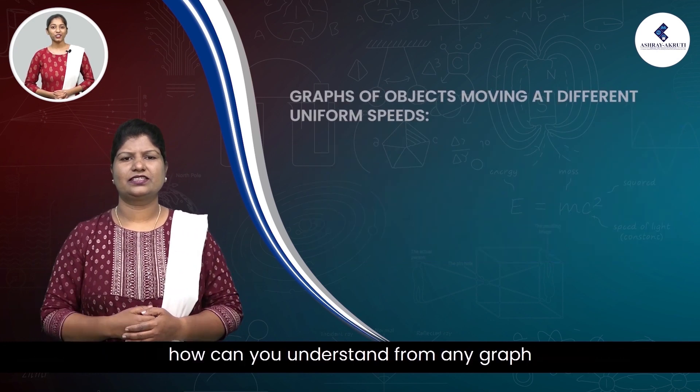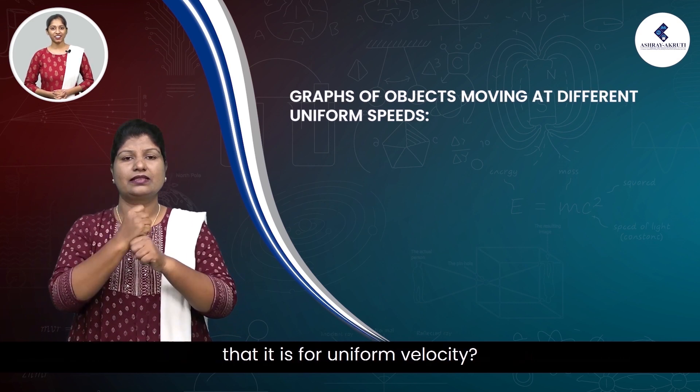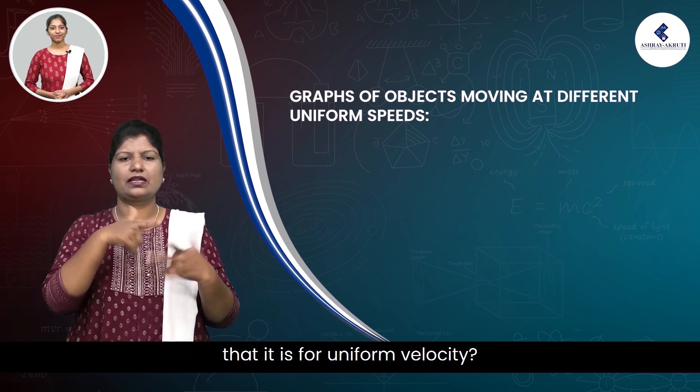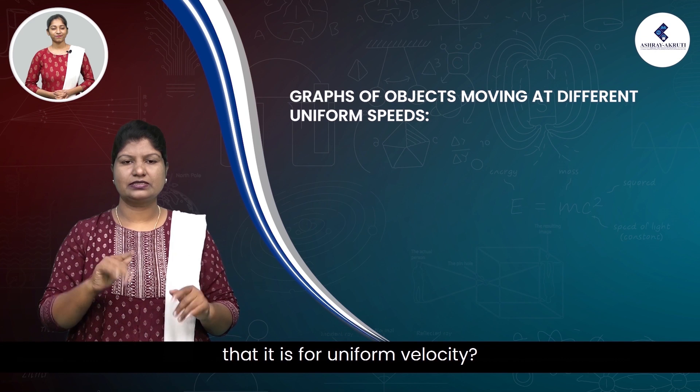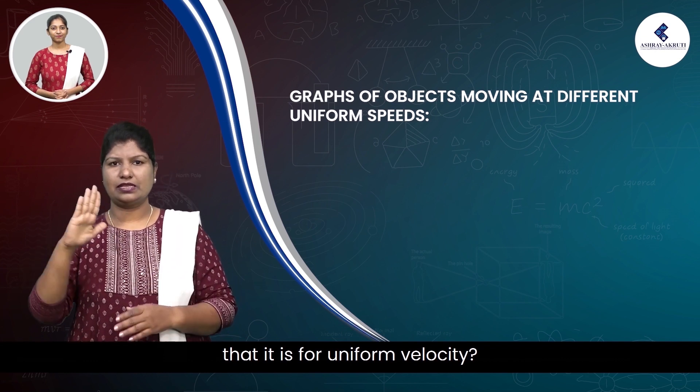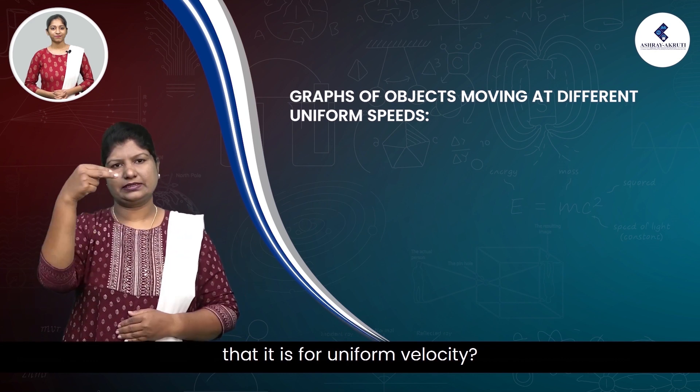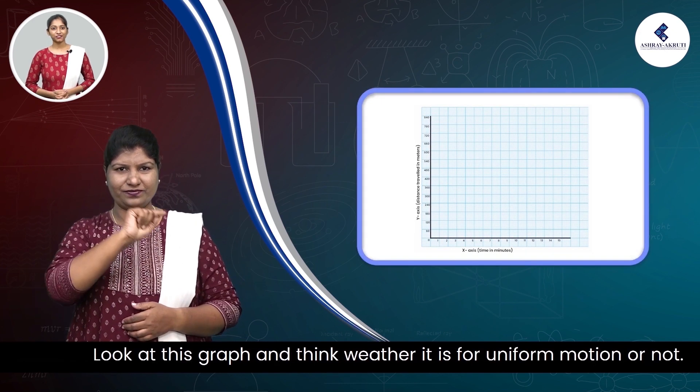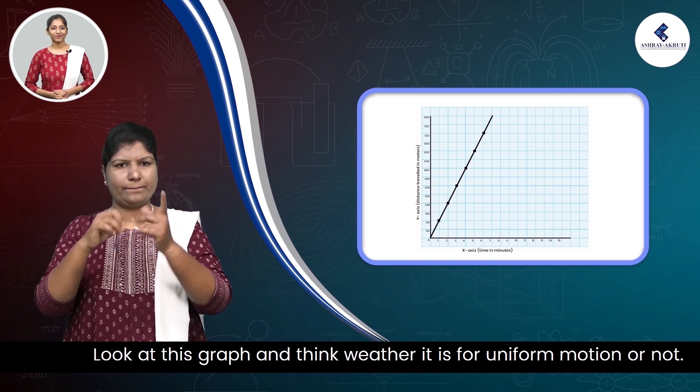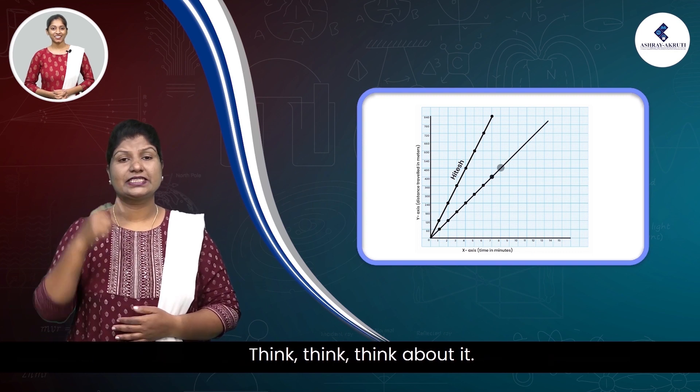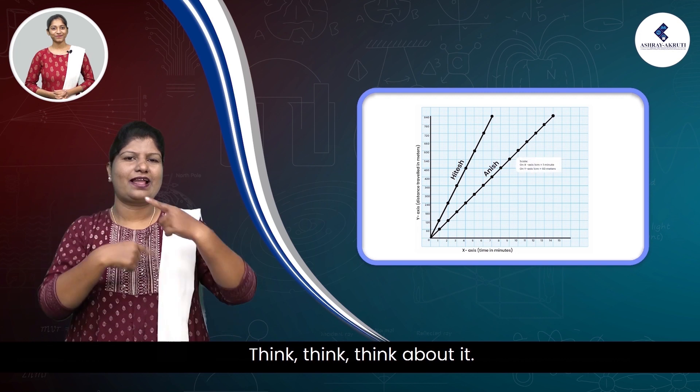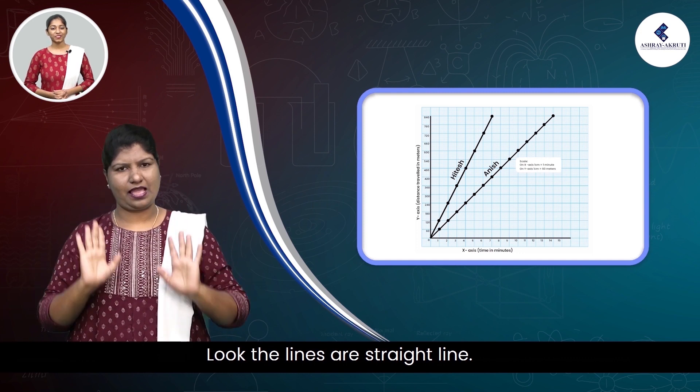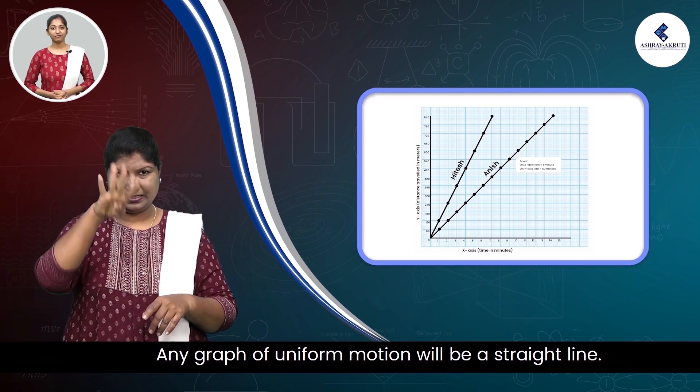Children, how can you understand from any graph that it is for uniform velocity? Look at this graph and think whether it is for uniform motion or not. Think about it. If the line is a straight line, any graph of uniform motion will be a straight line.